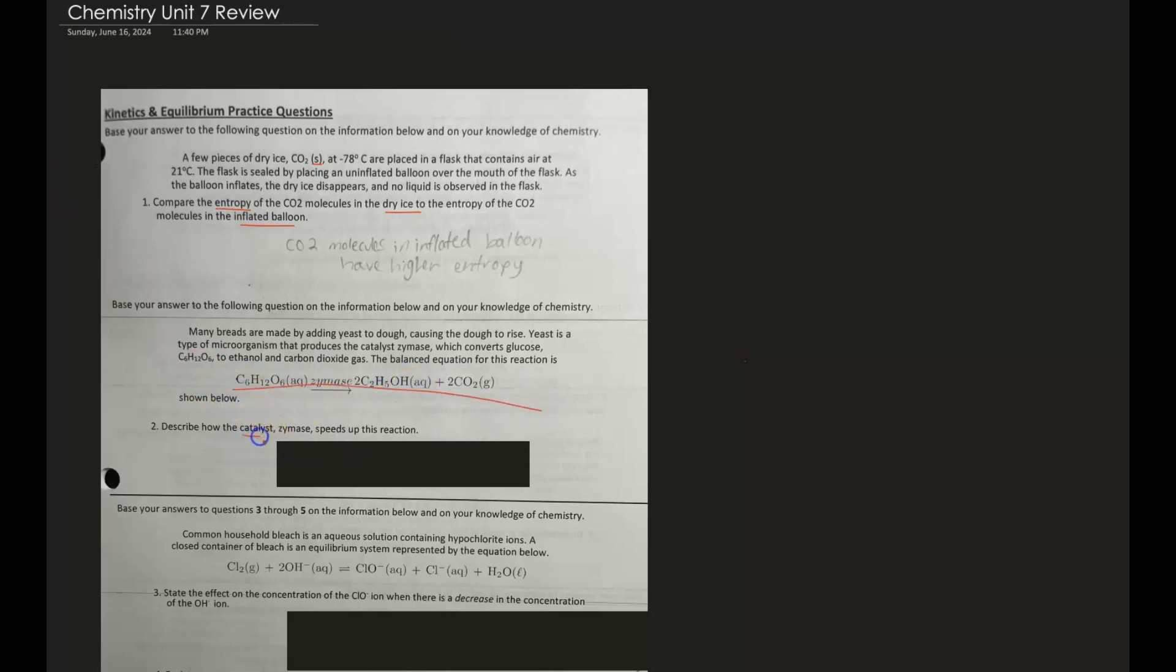So what does a catalyst actually do in a reaction? Well, it doesn't really do anything to the potential energy of your reactants or your final product. You're going to end up with the same thing. So what does it actually do? A catalyst just speeds up your reaction.